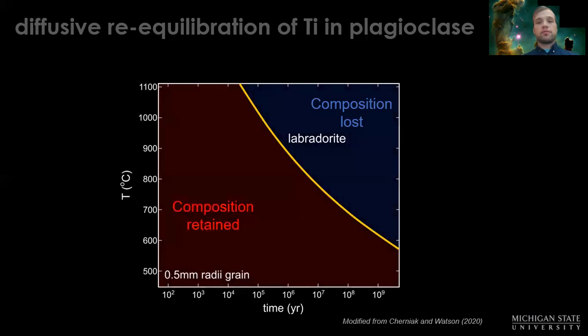To lose it, we either have to be hot enough or those crystals have to be in a new magma long enough for that composition to be lost and reach the blue field there. The yellow line is the rate of diffusion for the plagioclase composition of labradorite, which is what we predominantly see.